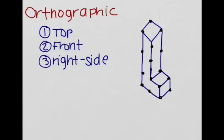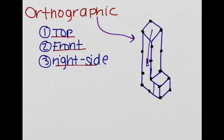Now orthographic drawings basically take a 3D figure and draw the top view, the front view, and the right side view in 2D. So for example, we're going to draw orthographic drawings for this figure. From the top, when I look at it from the top and smash this down to the ground, what would I get?